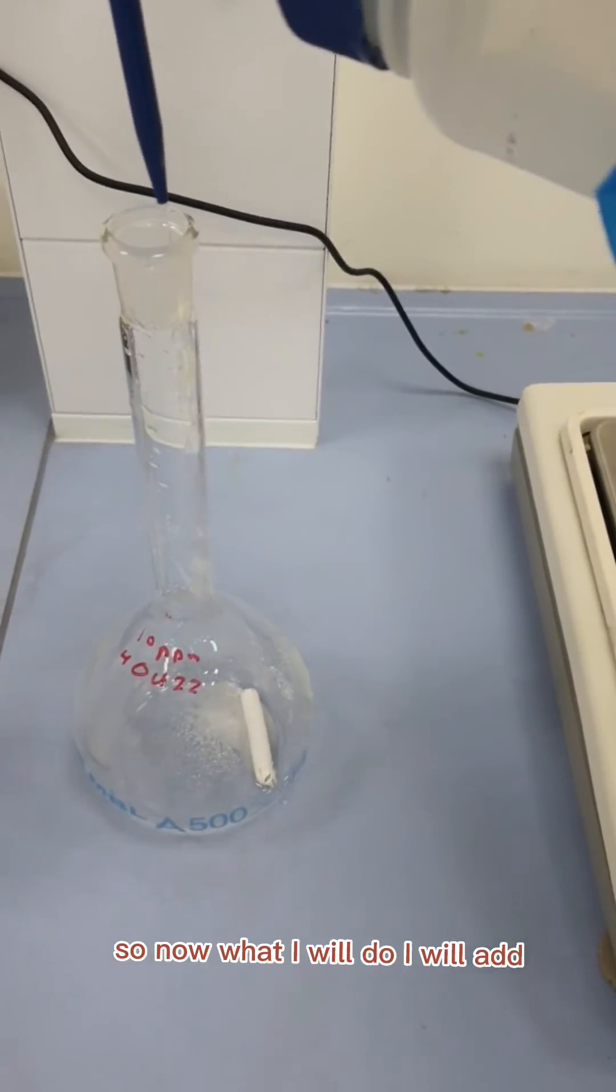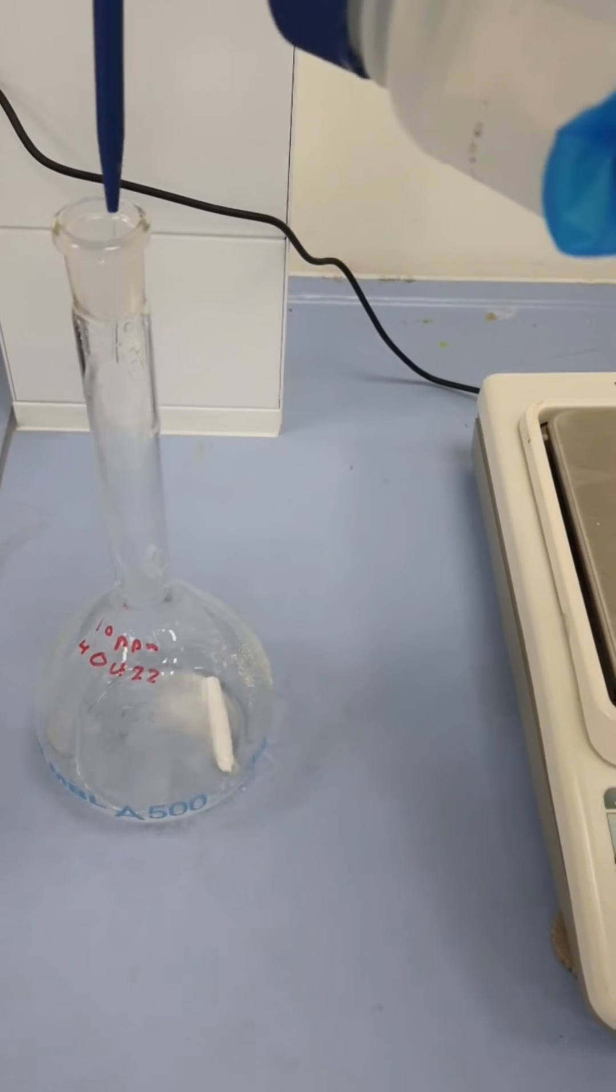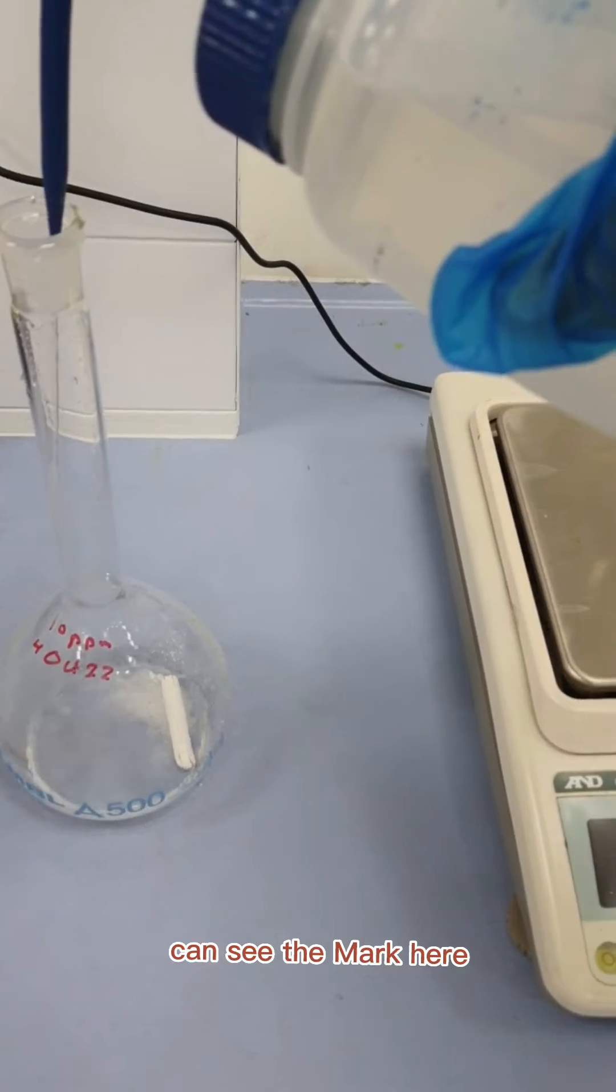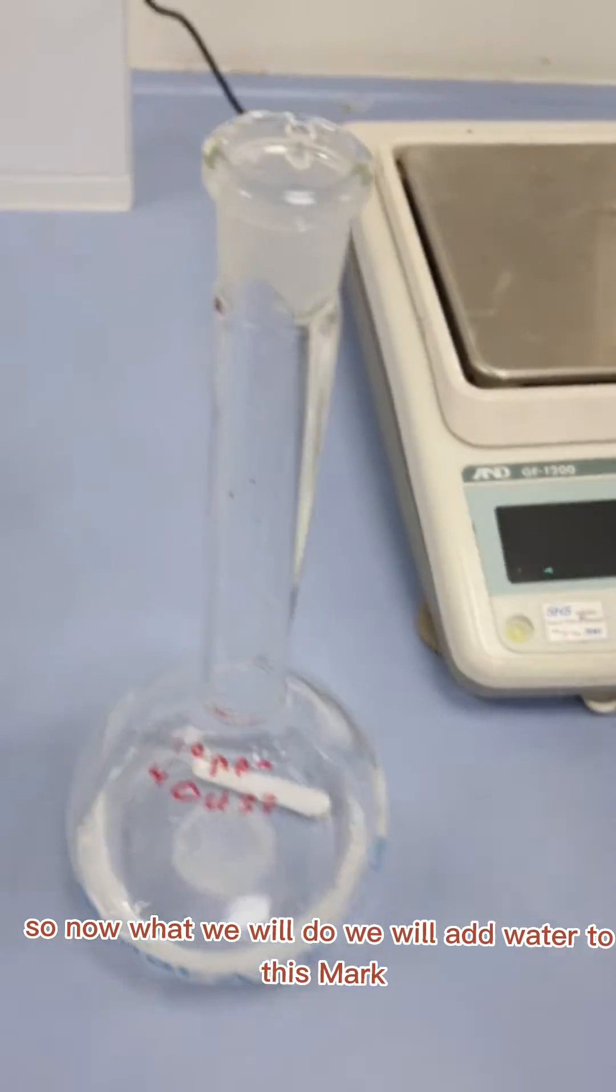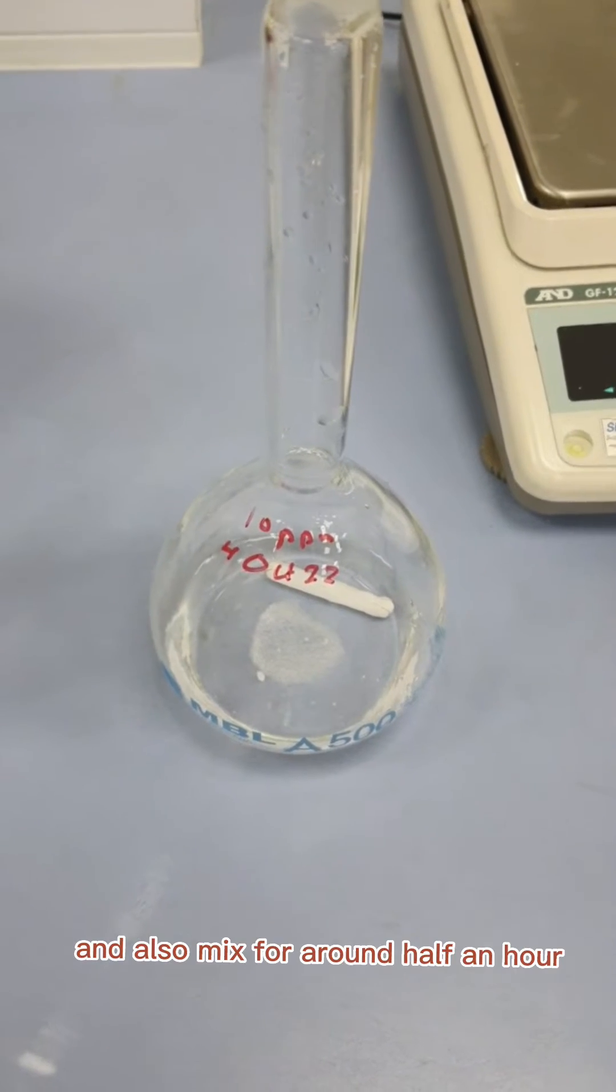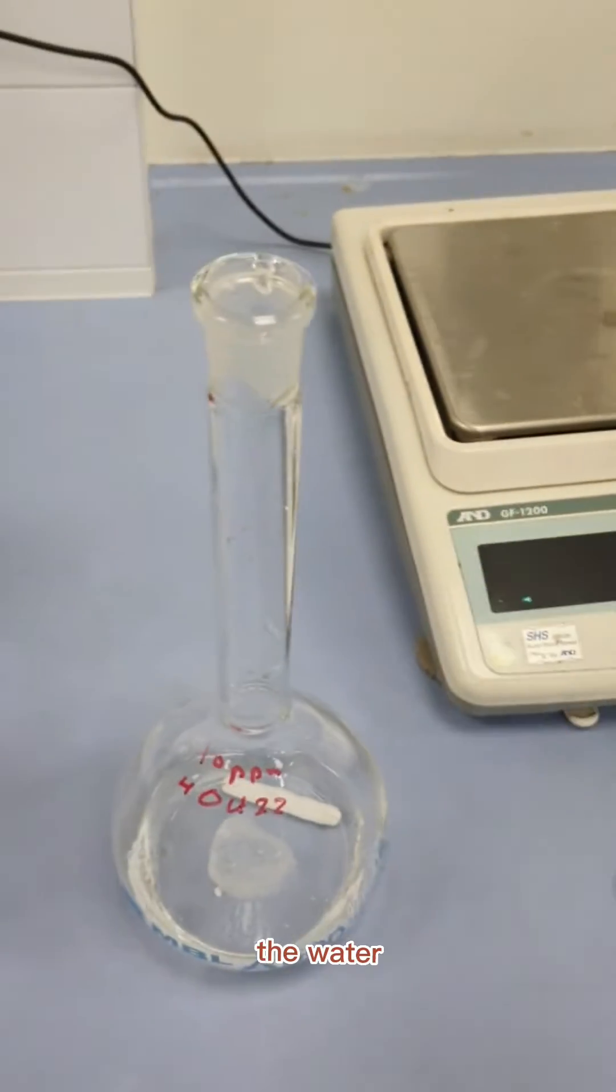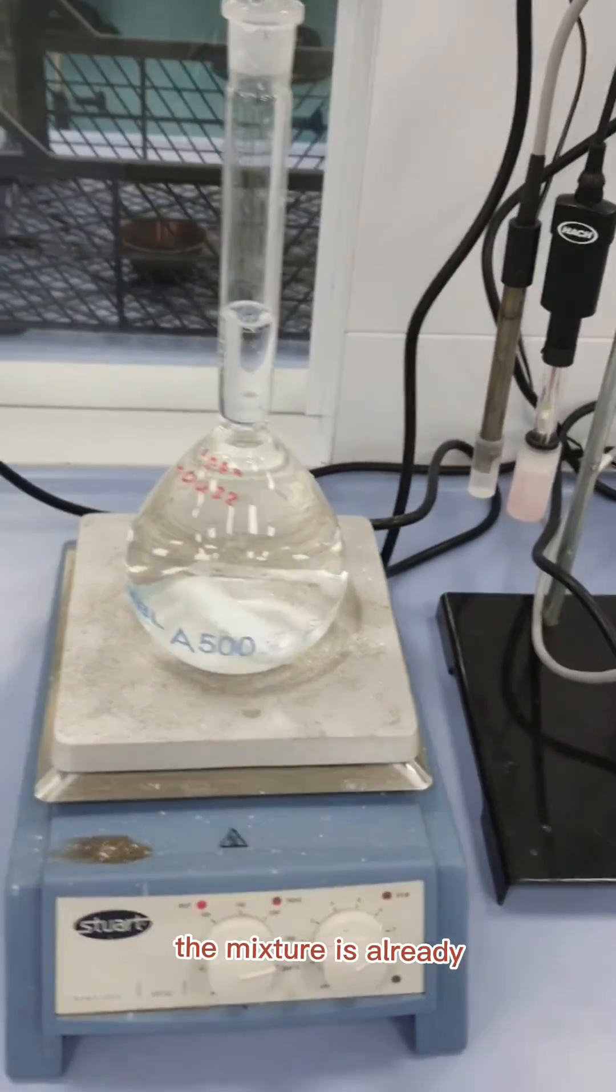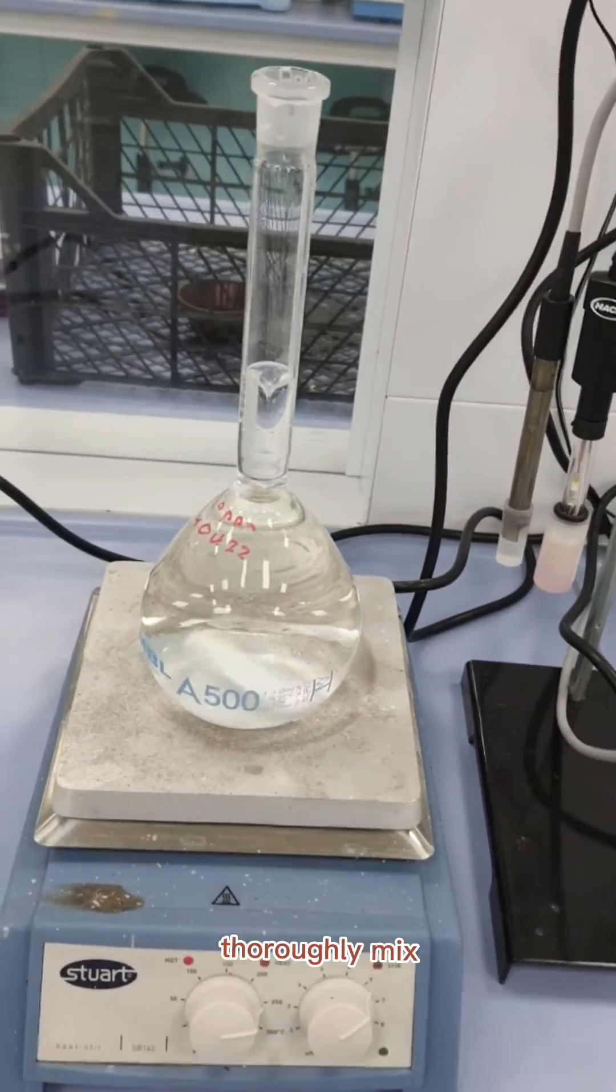Now I have transferred the required amount of salt. Now what I will do is add around 500 ml of water. You can see the mark here. We will add water till this mark and then heat and mix for around half an hour until the water starts to boil.